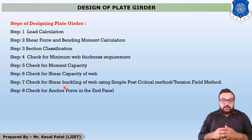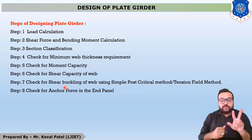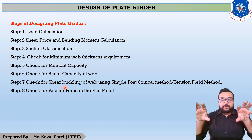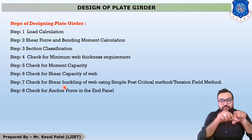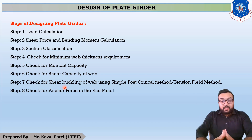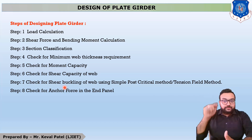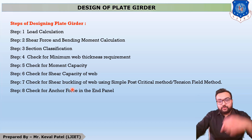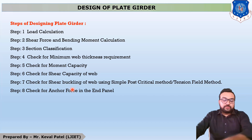The last step, step number eight, is to check for anchor force in the end panels. There are two types of stiffeners: vertical and horizontal. In vertical stiffeners there are two types — end bearing stiffener and intermediate stiffener. The end bearing stiffener takes horizontal and vertical loads; that vertical load is called the anchor force, and this calculation is done in step number eight.